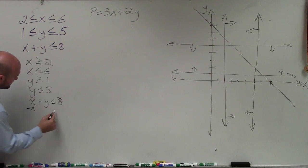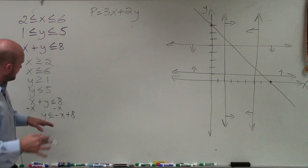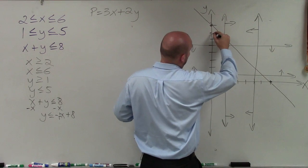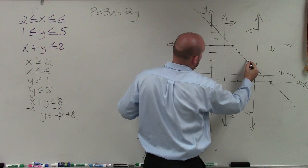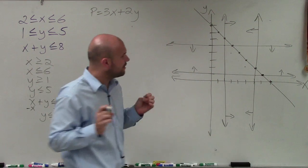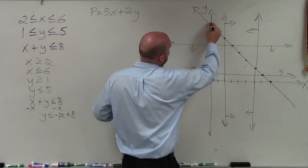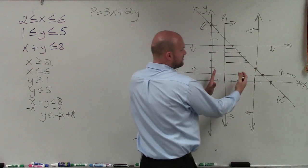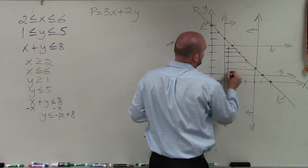To put this in slope-intercept form: y is less than or equal to negative x plus 8. That's helpful because we know the slope is going down 1 over 1. Starting at 8, I go down 1 over 1 repeatedly to trace the line. We also notice that the feasible region is going to be below this line. So the feasible region lies in between the two vertical lines and below this diagonal line.